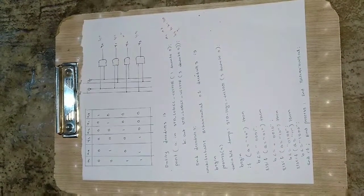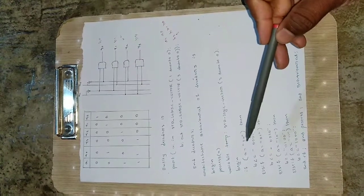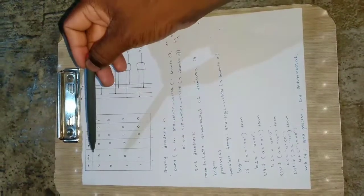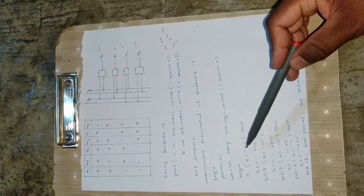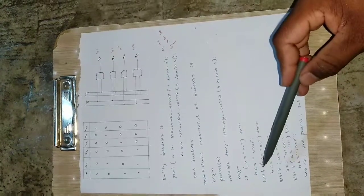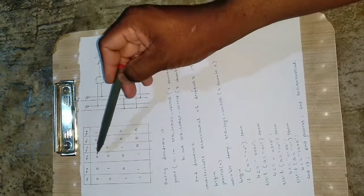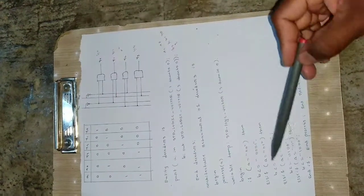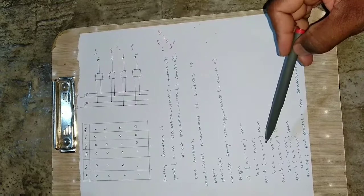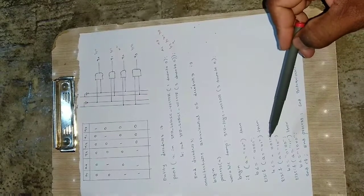Then with the help of if statement we are writing. So if a is equal to 0 0, that means first condition if a is equal to 0 0, then b is assigned with 0 0 0 1. So b will be assigned with 0 0 0 1. And else if a is equal to 0 1, then b will be assigned with 0 0 1 0.